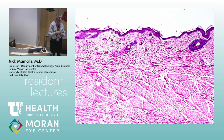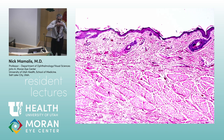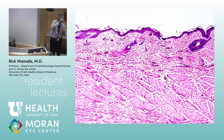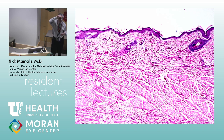The orbicularis doesn't open and close the eyelid, but it keeps the lid against the surface of the eye — it keeps it from flopping all over. It runs circumferentially, whereas the levator runs vertically.